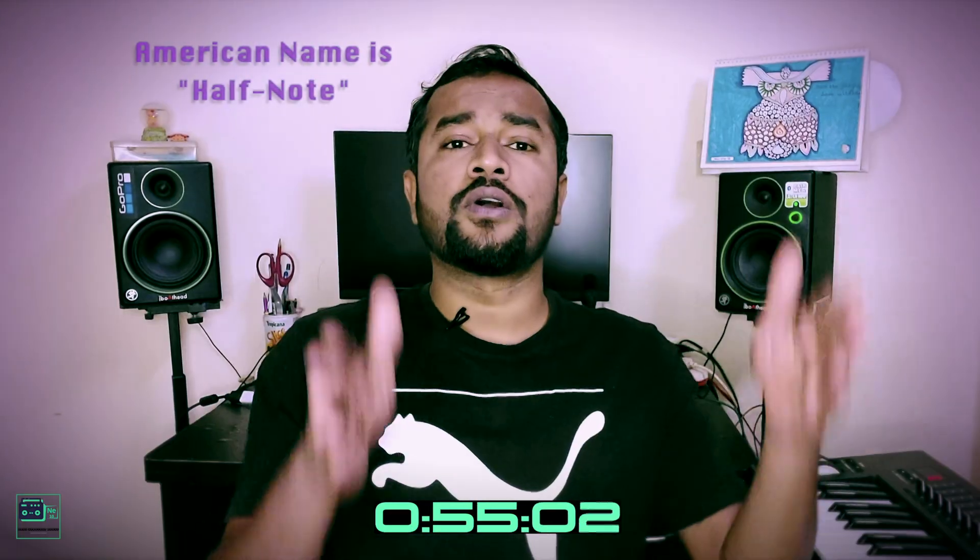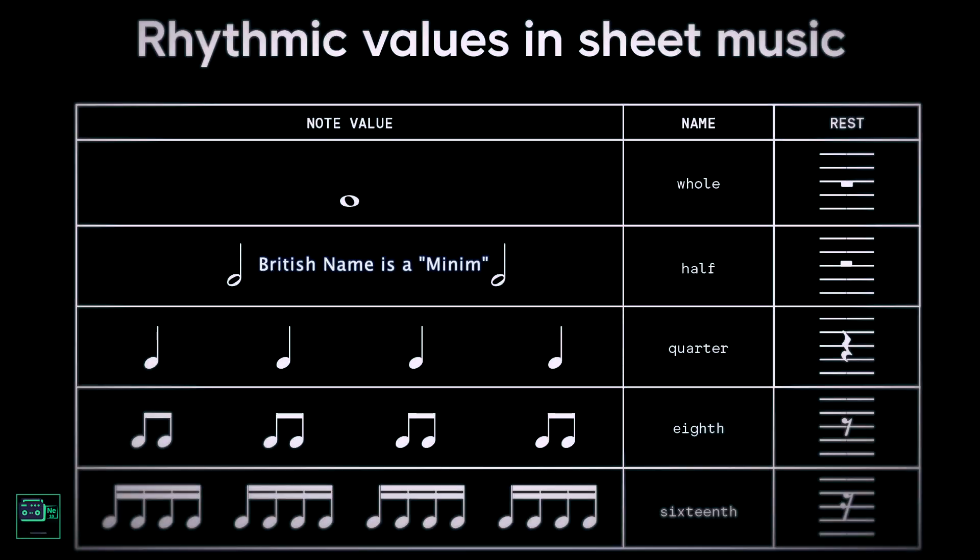The next longest note is the half note. The half note is the length of two counts. So we will hold for two counts — one, two. One, two. The second count is held. That's how a half note works.